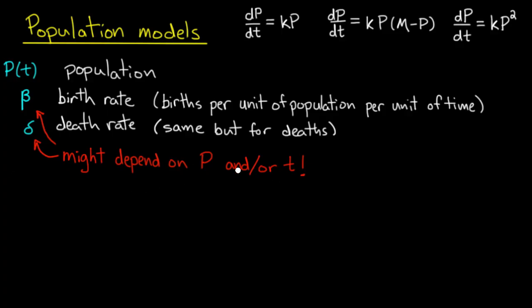And this is a pretty reasonable dependency. Because for example, the birth rate may go down as the population increases, because there could be something like a food restriction, or overpopulation may make people less likely to have children.